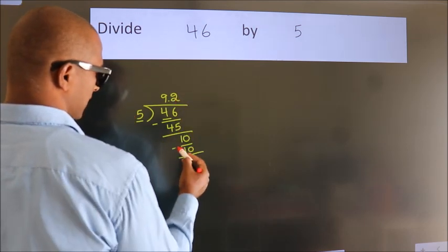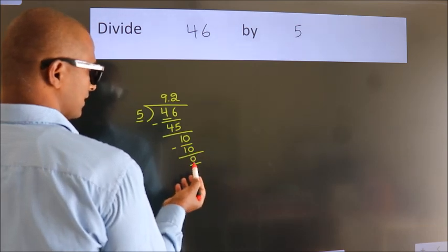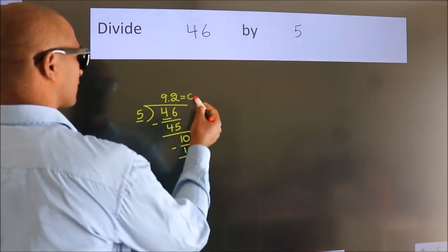Now, we subtract. We get 0. We got remainder 0, so this is our quotient.